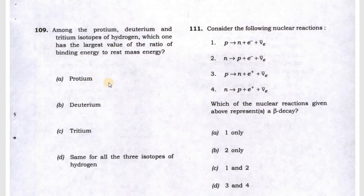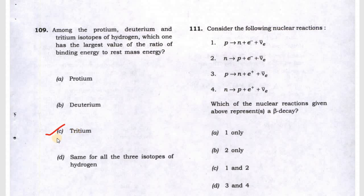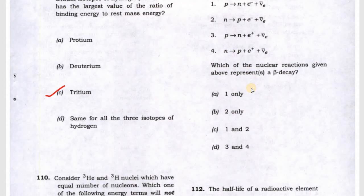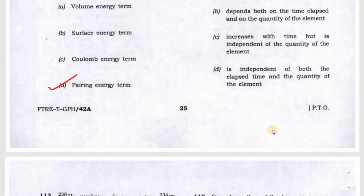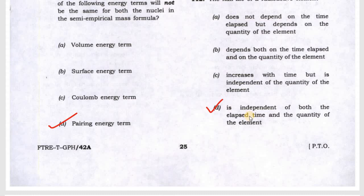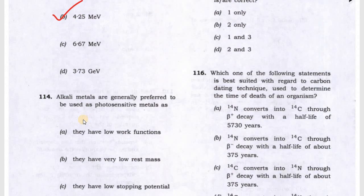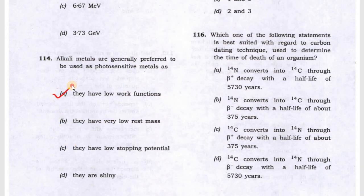Question 111 will be B. Question 112 will be D. Question 113 is just mass difference, answer is B. Alkali metals have low work function, so A is the answer. Question 115 is also correct.